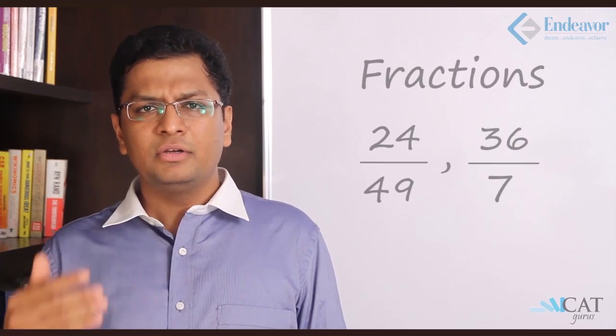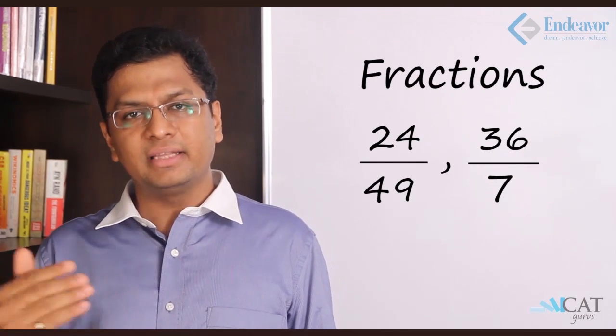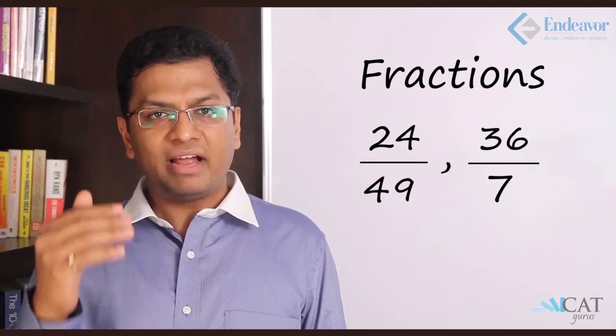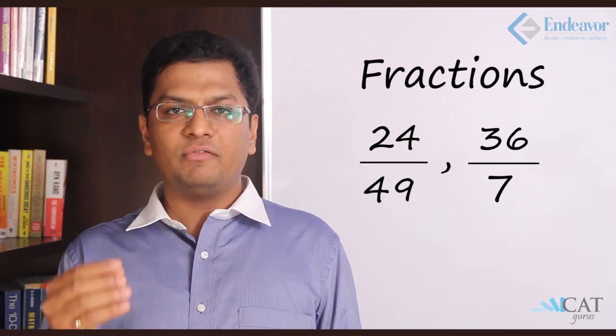Let's look at some difficult or trickier parts. How do we find the LCM or HCF of a fraction? Let's take similar numbers. So 24 upon 49 and 36 upon 7. So we have to find out the LCM and HCF of both the numbers.